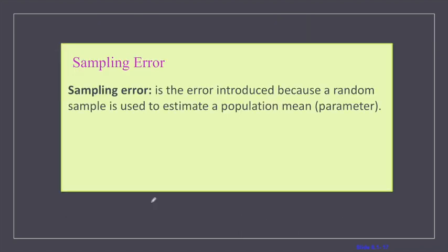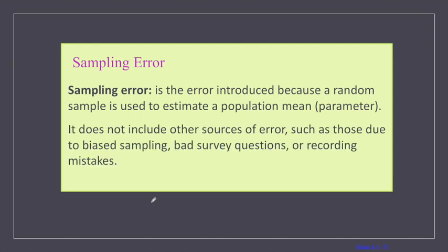Sampling error is the error introduced because a random sample is used to estimate a population mean or parameter. Importantly, it doesn't include other sources of error such as biased sampling, bad survey questions, or data recording mistakes. Bad survey questions are questions with a negative or positive connotation — for example, asking 'would you like a tax cut?' makes everyone say yes, but doesn't account for the fact that paying less in taxes might mean paying more to local government or nonprofits because funding is being slashed.